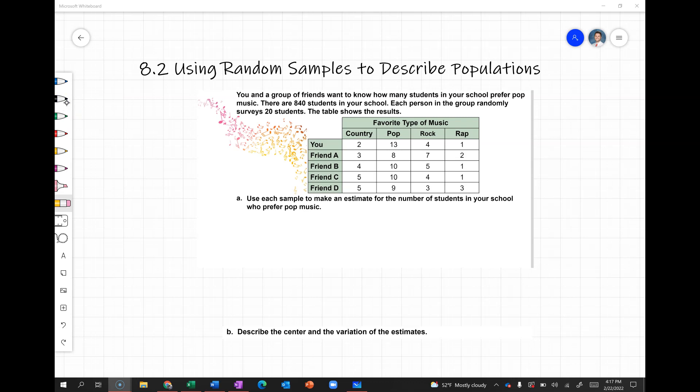Alright, in this video we are looking at using random samples to describe populations. Remember if a sample is random and unbiased, then we can actually use that to describe a larger population. Rather than gathering data for the entire population, which is usually not possible, we can instead get a smaller sample and use that to describe the data.